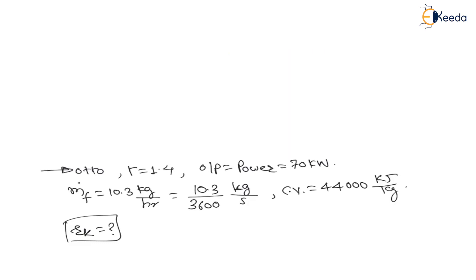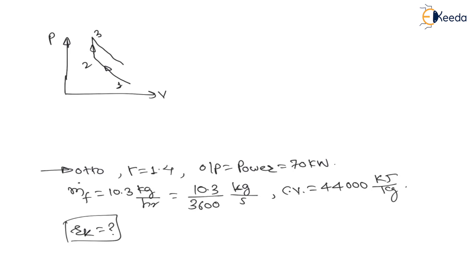Here they have mentioned Otto cycle. If I draw the Otto cycle on a PV diagram — pressure versus volume diagram — the first process is reversible adiabatic compression 1 to 2, second is 2 to 3 constant volume heat supply, 3 to 4 is reversible adiabatic expansion, and 4 to 1 is constant volume heat rejection.